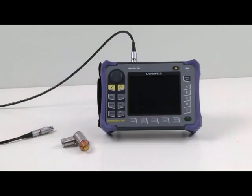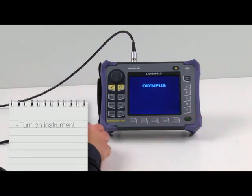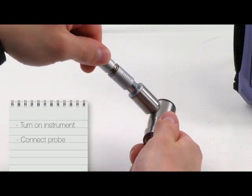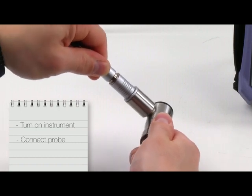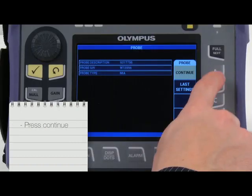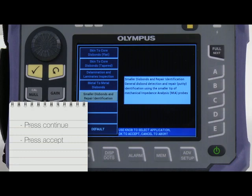For typical inspection procedures, such as inspecting an aircraft component, turn on the instrument and connect the MIA probe. When prompted, press Continue, then Accept to load the default settings.